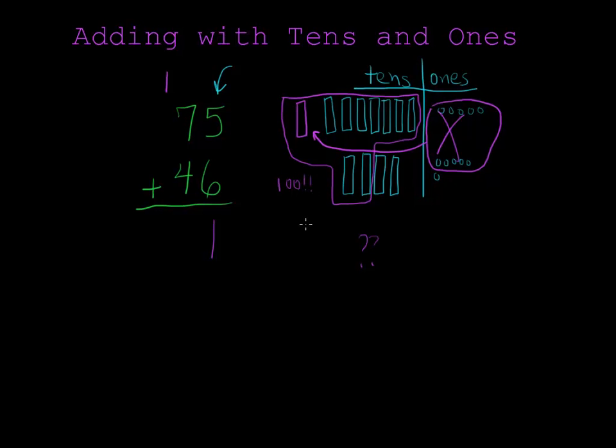So I know my answer is going to be in the hundreds. Well, there's actually 12 tens altogether. So when I write the 12, I see that my answer is 121. There's 100, 2 tens, and 1 in the ones column.